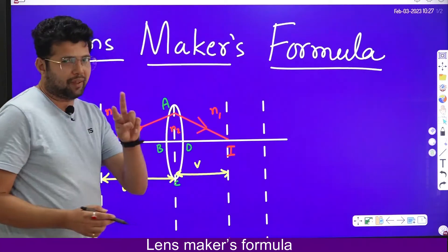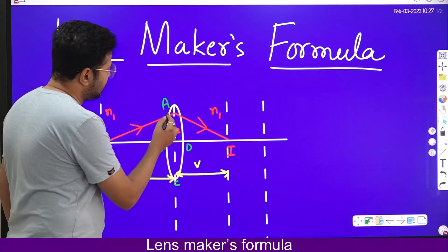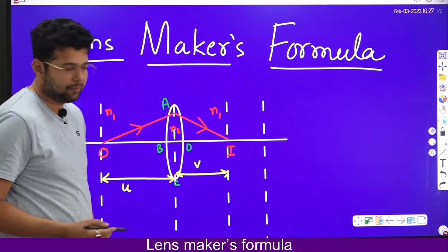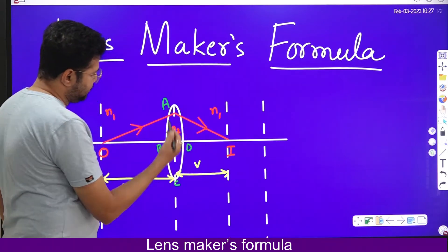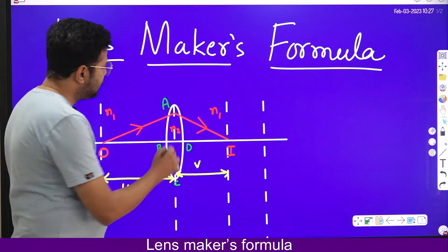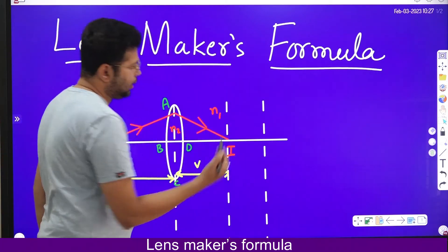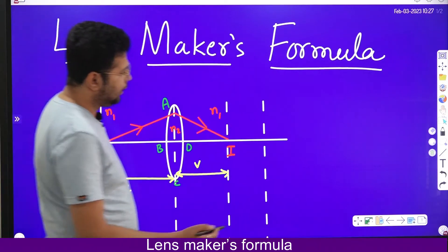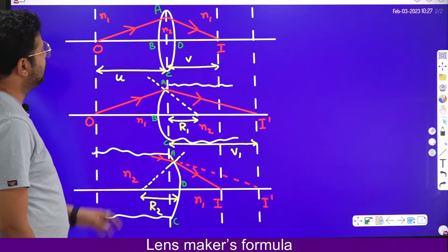There will be two refractions here: one refraction through surface ABC, and one through the other curved surface. In the absence of one curved surface, the ray will directly pass through without a second refraction. We will discuss this in detail.